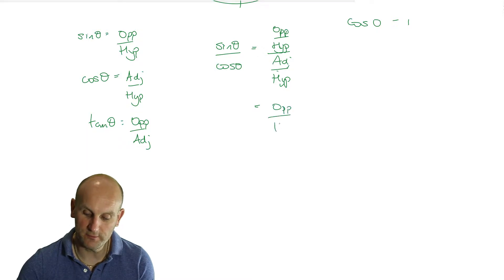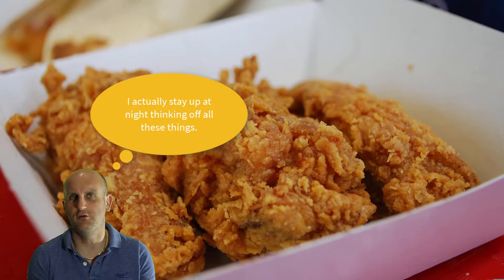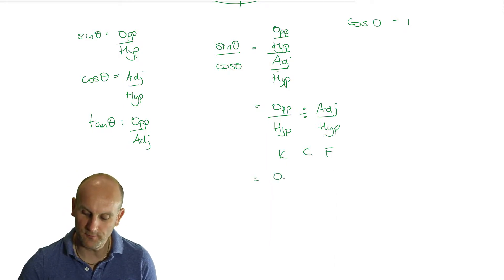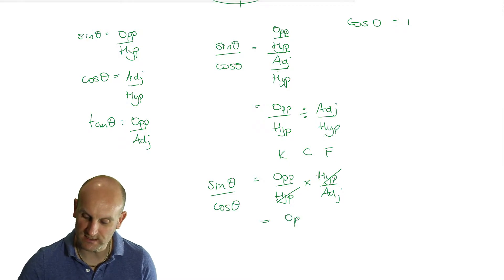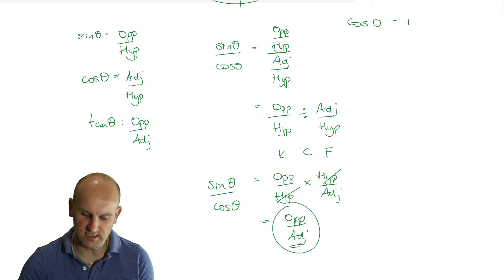Now I'm going to say tan of theta we knew was opposite over adjacent. Now watch what happens when I do sine of theta divided by cosine of theta. I could write this as op on hype divided by adj on hype. And the awesome people with fractions will go, oh yeah, that's easy. But I'm going to do it the long hand. I'm going to do opposite over hypotenuse divided by adjacent over hypotenuse. Now we can't divide fractions, but what we can do is Kentucky chicken that's fried. Kentucky fried chicken's already taken. Think about it. Kentucky chicken that's fried. Keep, change, flip. So I'm going to keep the opposite divided by the hypotenuse. I'm going to times and I'm going to do hypotenuse divided by adjacent. They cancel. Hold on a moment. Stop the horses. I know what that is. Opposite divided by adjacent is tan theta.